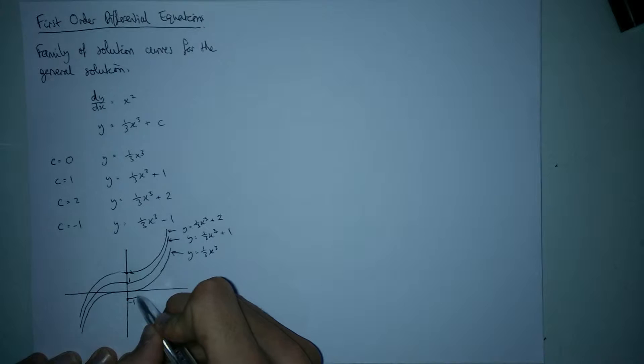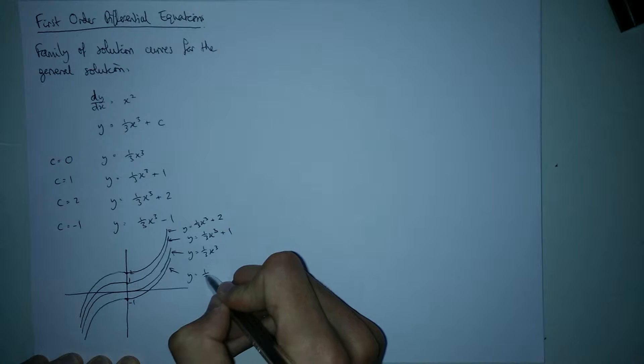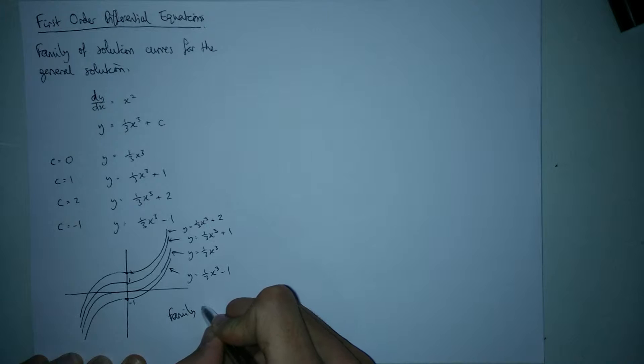And then the last one, the minus 1, goes through just here. And you can kind of see that this isn't the only option you can have. More going up here and more going down here. This is just four solution curves. There's obviously an infinite number of them. And this is what we call the family of solution curves.